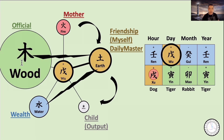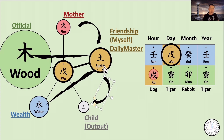Wood is the dominant energy — it is the Official Spirit, because wood controls Earth. Fire is the Mother Spirit because it generates and produces Earth. Metal is the Child Spirit as an output, because it comes from the Daily Master, myself. And water is the Wealth Spirit, because the Daily Master controls water. So there are five spirits, and we say it is a wood dominant or Official Spirit dominant chart.